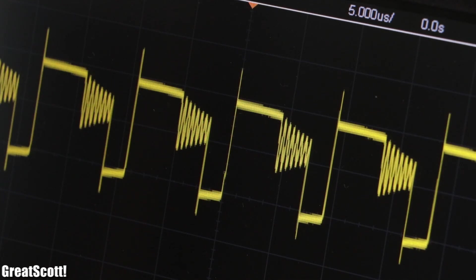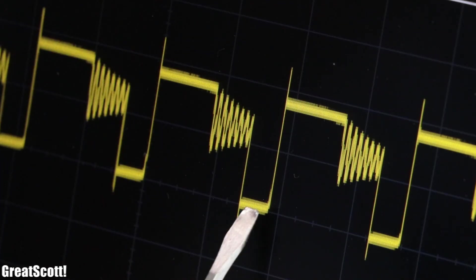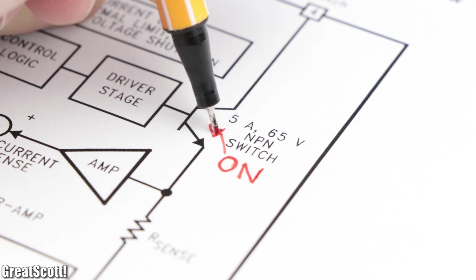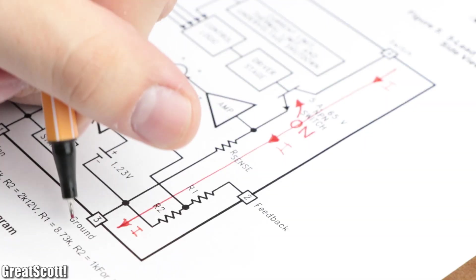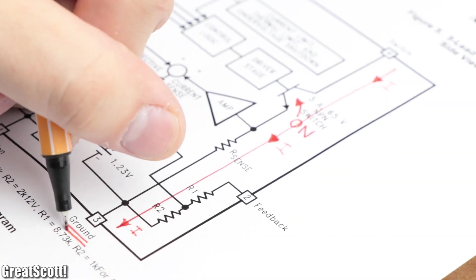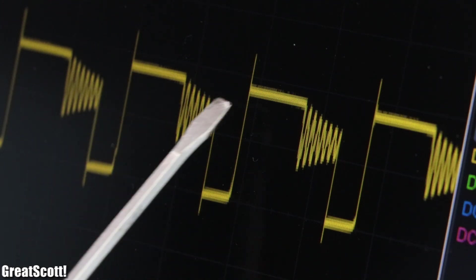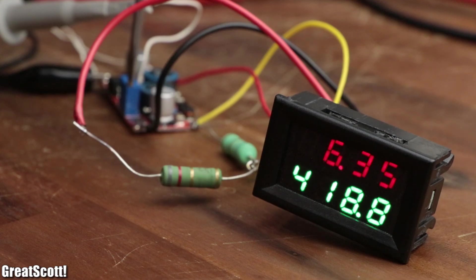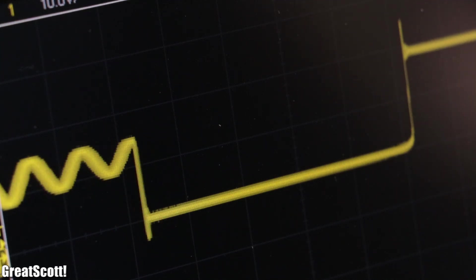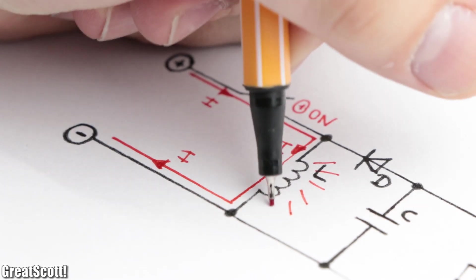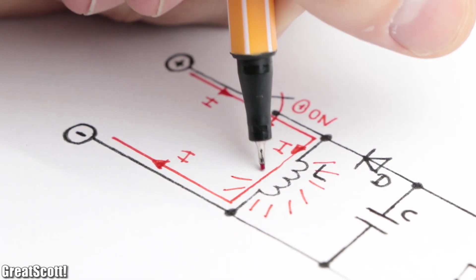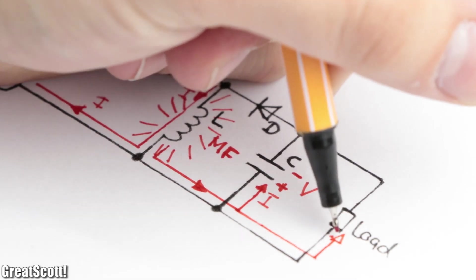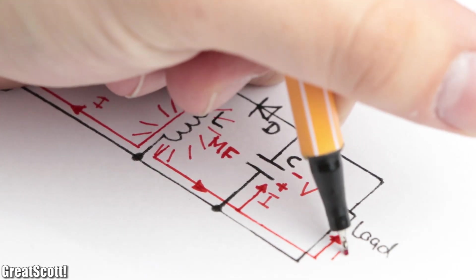On the oscilloscope, we can see a PWM signal, whose low voltage potential represents the on state of the switch, in which the inductor is connected to ground, and the high voltage potential represents the off state. Now when I increase the output voltage, the low voltage potential increases, since the inductor needs to save more energy in its magnetic fields to allow a higher output voltage, and thus current.